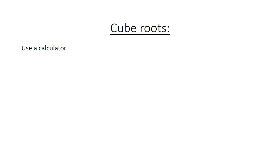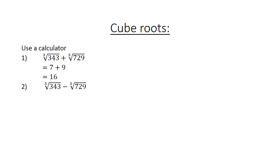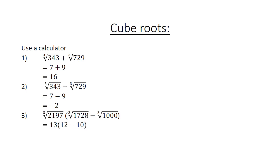Cube roots — use a calculator. Cube root of 343 plus the cube root of 729 equals 7 plus 9 equals 16. Cube root of 343 minus cube root of 729 equals 7 minus 9 equals negative 2. Cube root of 2197 times (cube root of 1728 minus cube root of 1000) equals 13 times (12 minus 10) equals 13 times 2 equals 26.